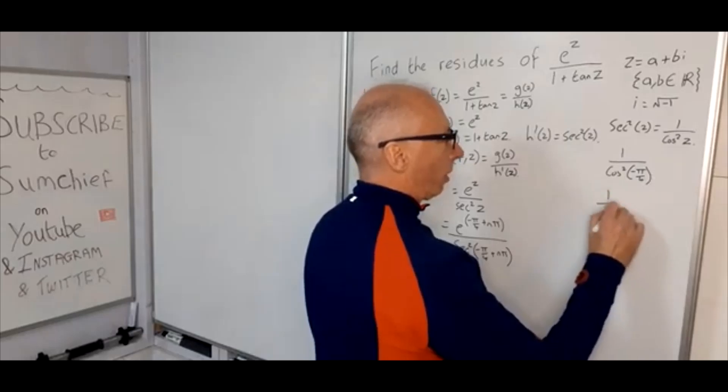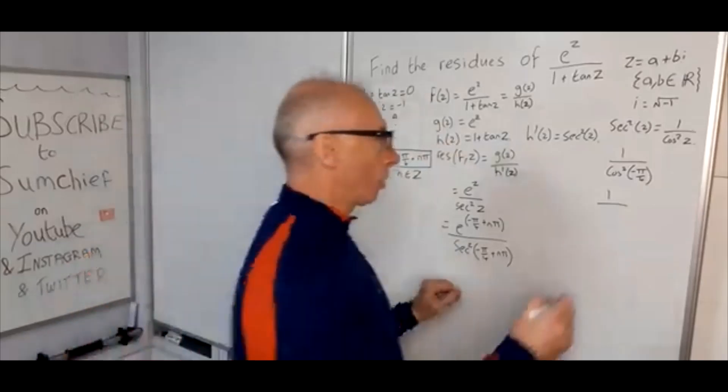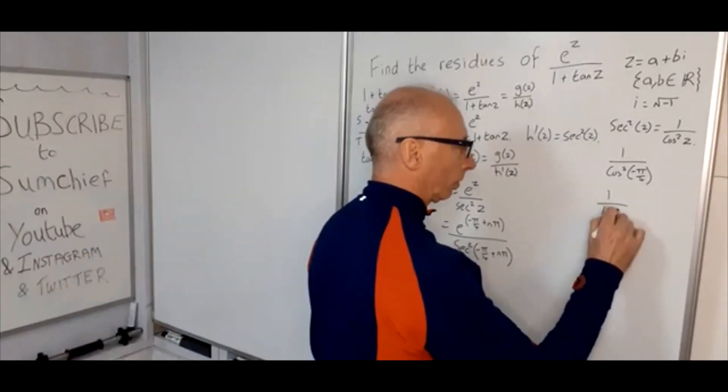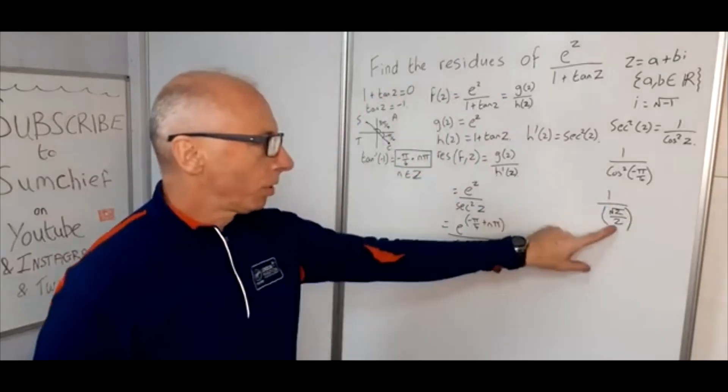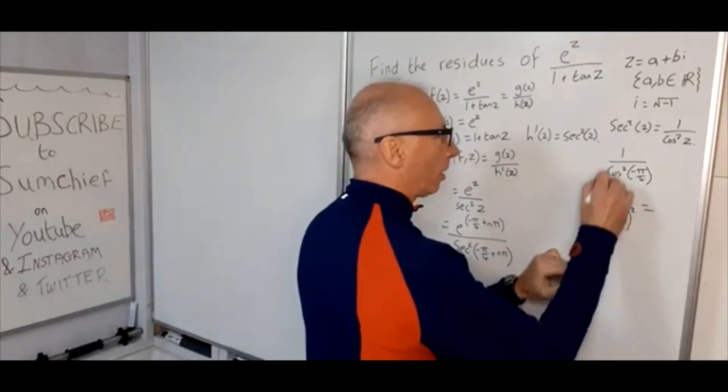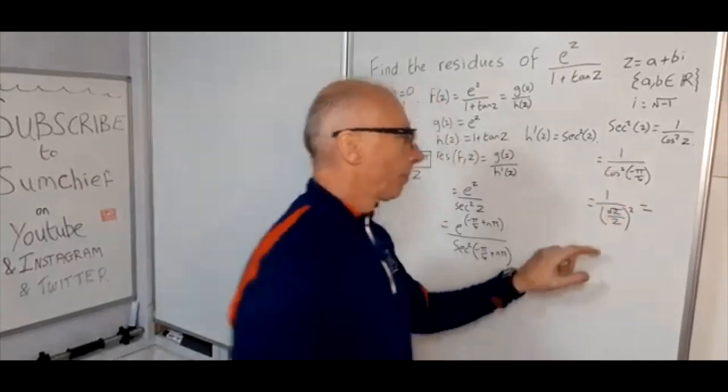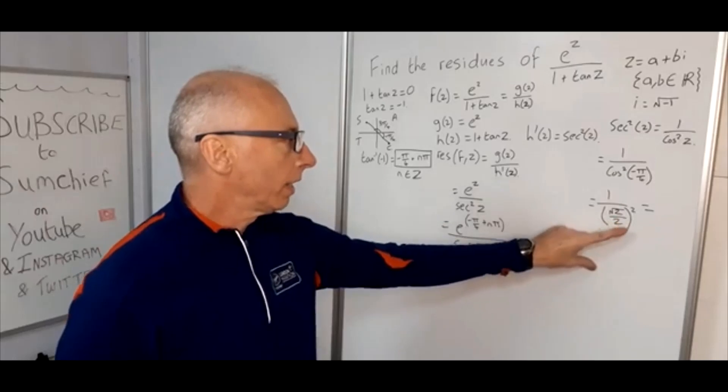So 1 over cos(-π/4). Well that's going to be √2 over 2. Let's be careful here. 1 over (√2 over 2), and then squared. Let's just keep my equal signs going. So (√2 over 2)². So √2 squared is 2.